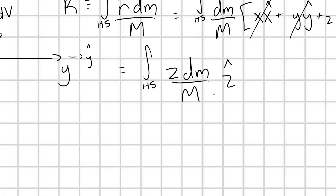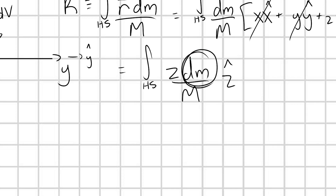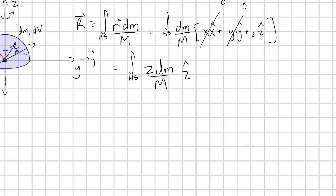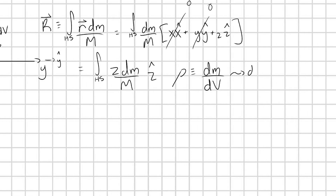How do we actually use this integration? We have a problem: I have this spatial coordinate z as my integrand, and yet I'm claiming to integrate with respect to dm, which is not a spatial coordinate. We need to fix this. We know that our mass density ρ can be defined as the infinitesimal mass element dm associated with each volume element dv. In other words, dm = ρ dv.